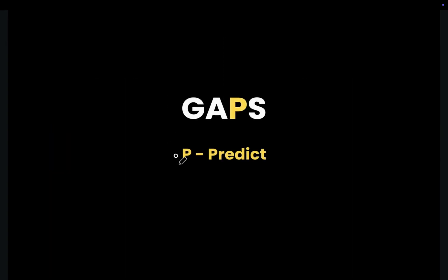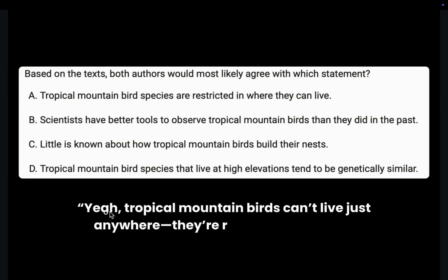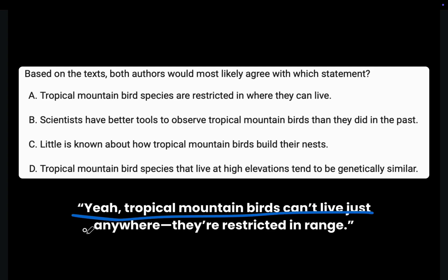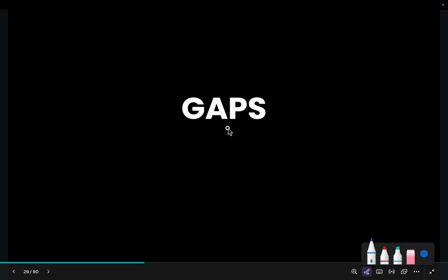Moving on to the third letter in GAPS: P — Predict. We need to predict what the authors would say. They would both agree with something like: tropical mountain birds can't live just anywhere — they're restricted in range.